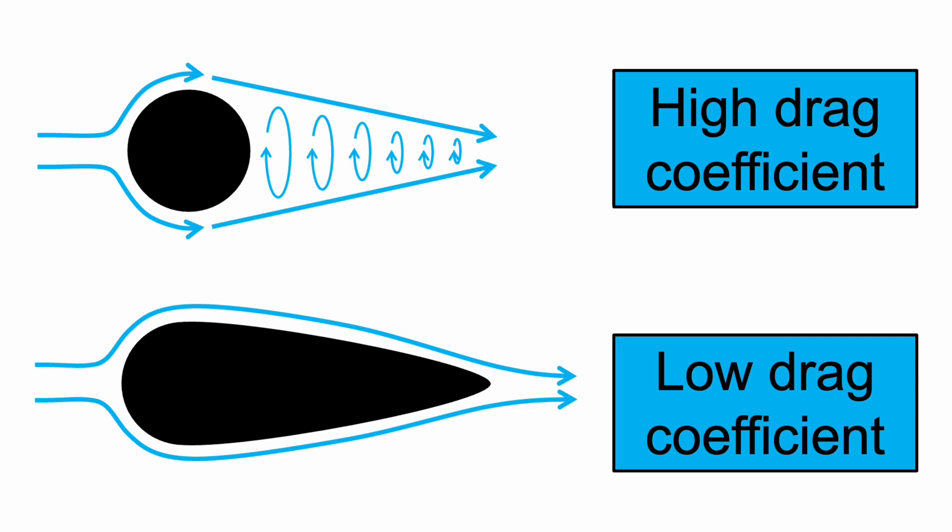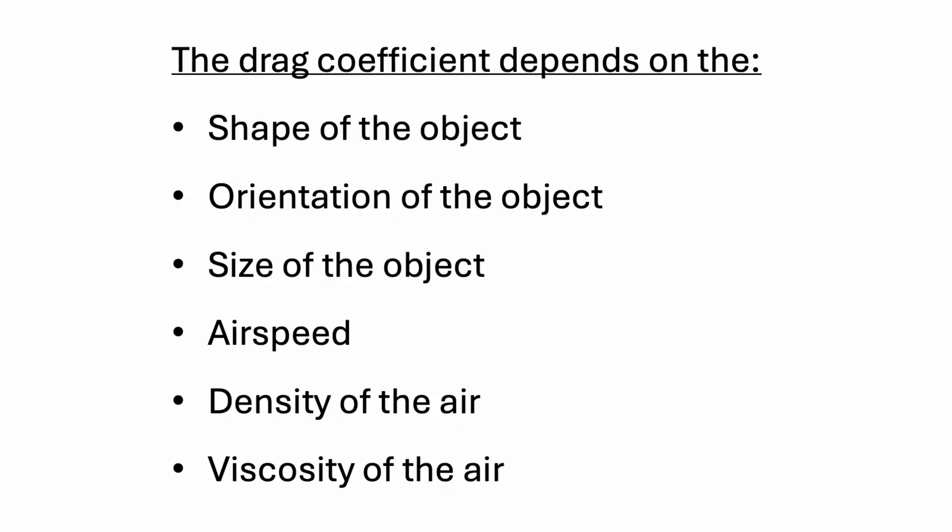Over the last few videos, we've been learning about lift and drag coefficients. Until now, we've been assuming that the drag coefficient depends on the shape and orientation of an object, such as how streamlined objects have lower drag coefficients than those that are not. The situation is actually much more complicated than this. In addition to shape and orientation, the drag coefficient depends on several other variables: the size of the object, the airspeed, the density of the air, and the viscosity or stickiness of the air.